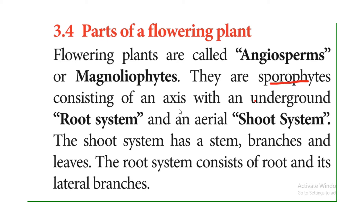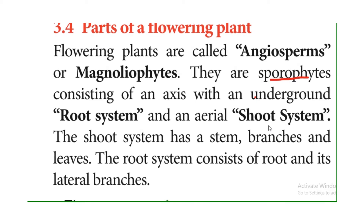A flowering plant is an axis with an underground root system and an aerial shoot system. The underground part is the root system, and the aerial portion is present above the ground — that is the shoot system.